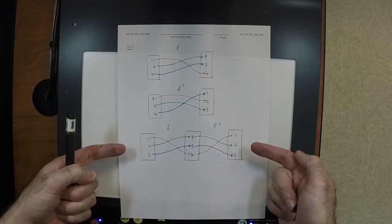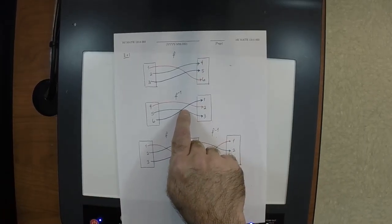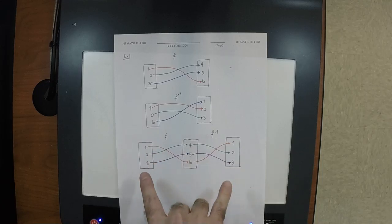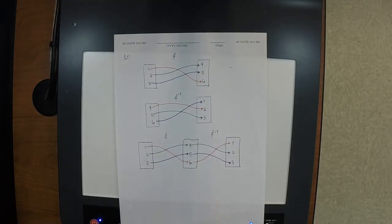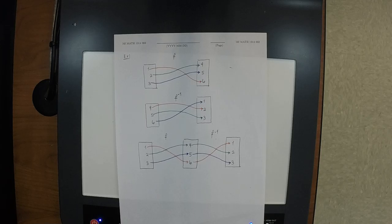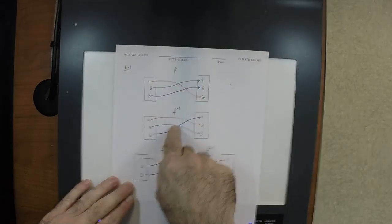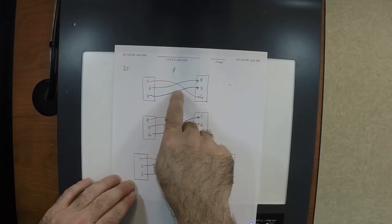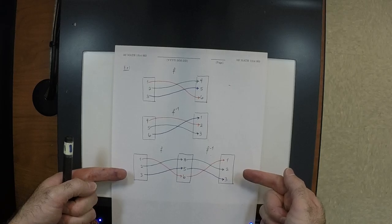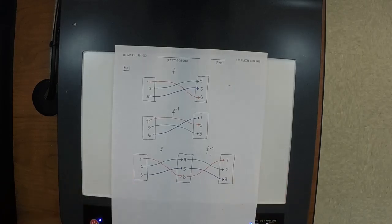We got the identity function — that's why this is the inverse function of that one. Because when you compose them, you get the identity. Just like: why is negative four the additive inverse of four? Because when you add them you get zero. Why is three-halves the multiplicative inverse of two-thirds? Because when you multiply them you get one, which is the multiplicative identity. Why is this function the functional inverse of that function? Because when you compose them, you get the identity function.